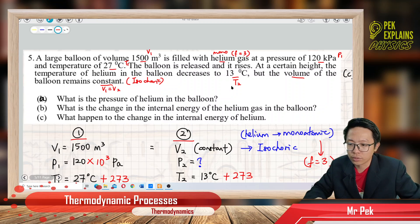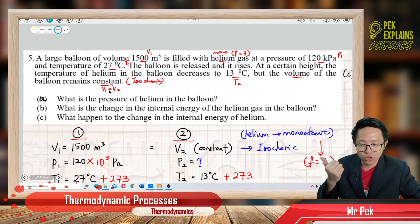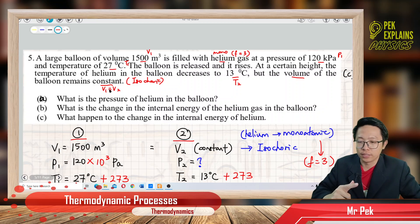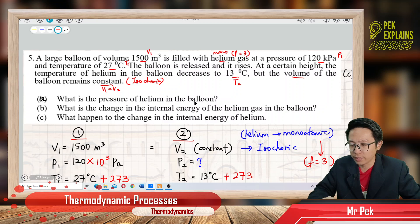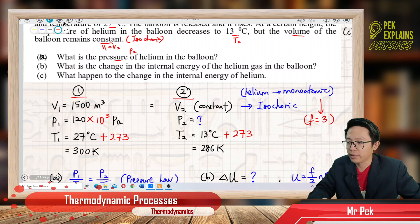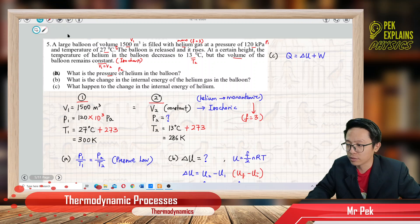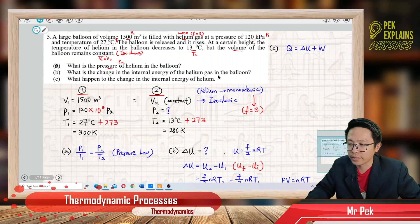If volume is constant, then it is the pressure and temperature that are changing. What is the pressure of helium in the balloon? This asks for the final pressure P2. I like to gather the information first — this is my practice always. I always like to gather the information first.